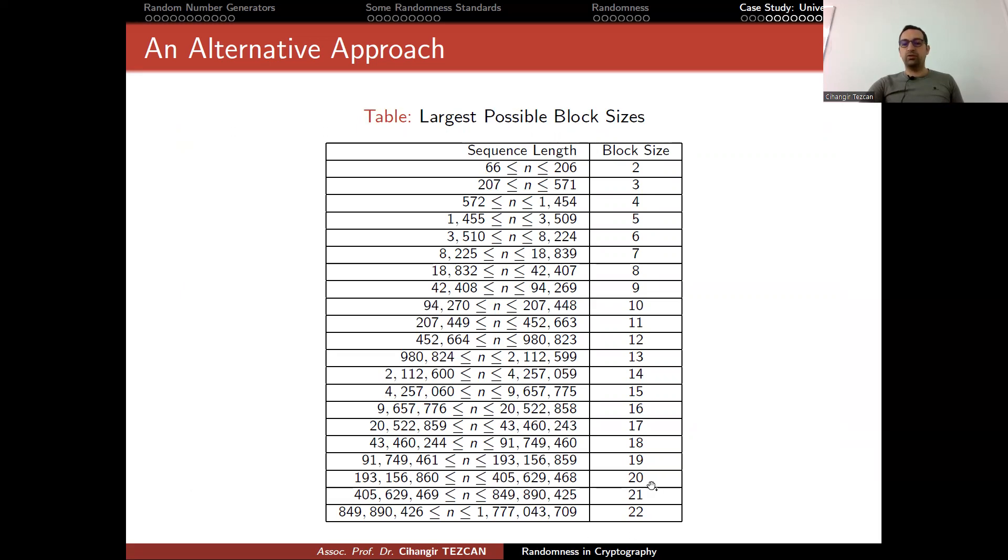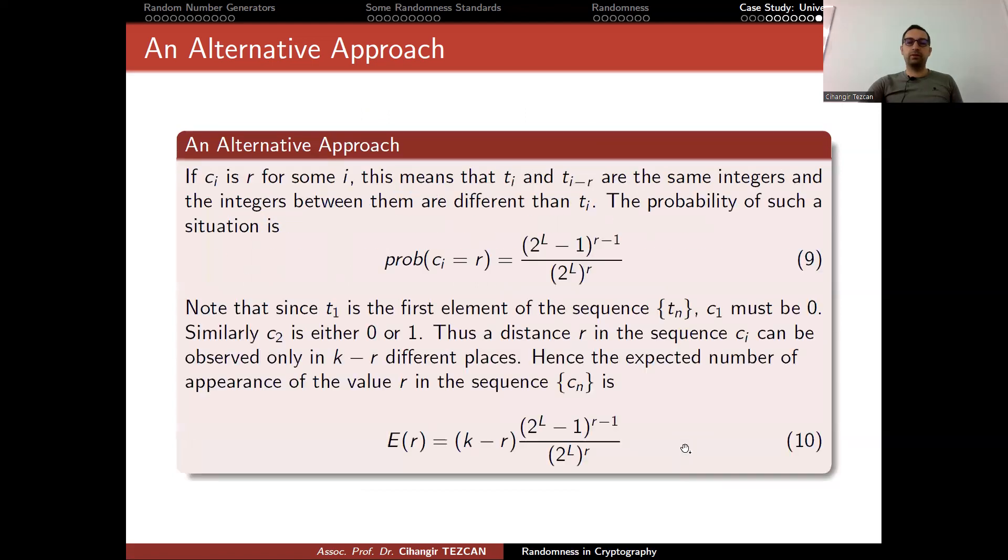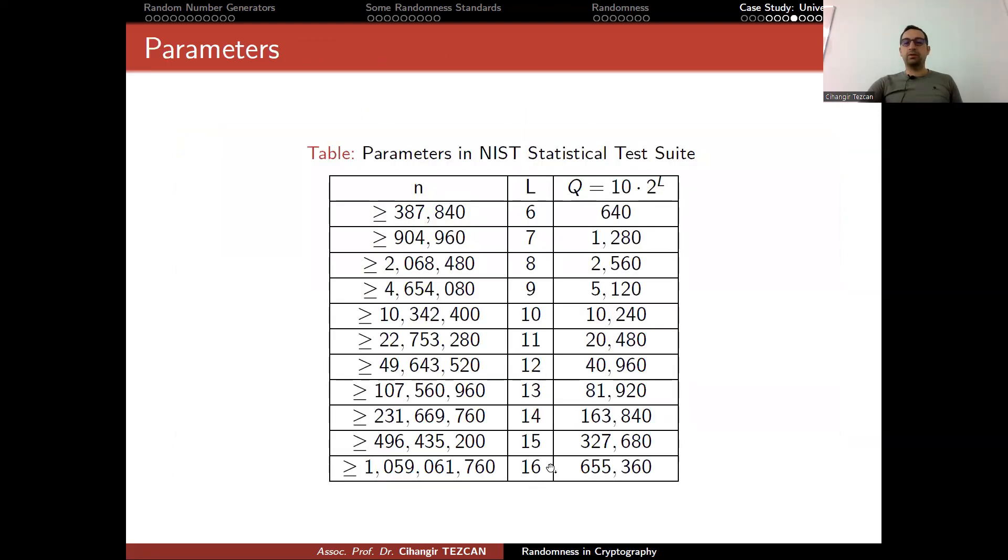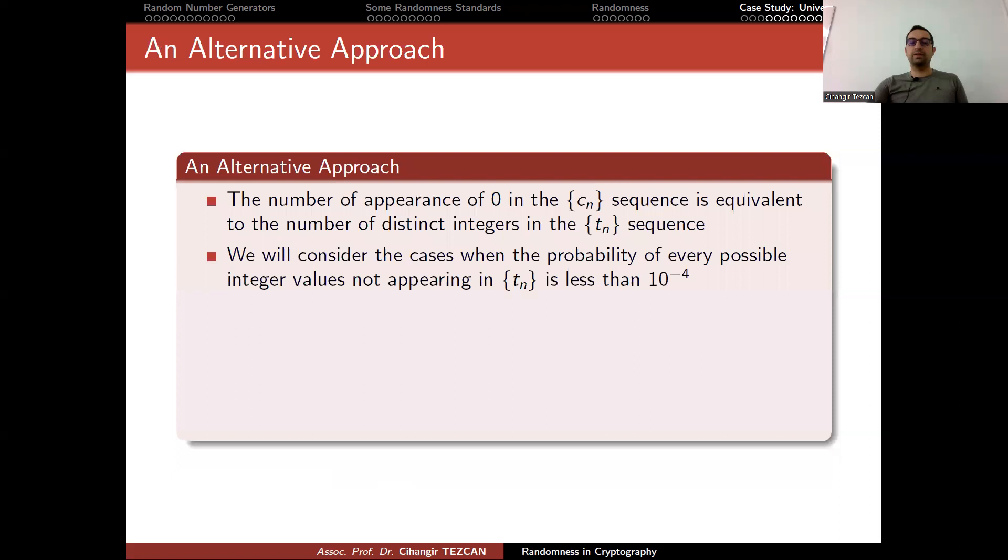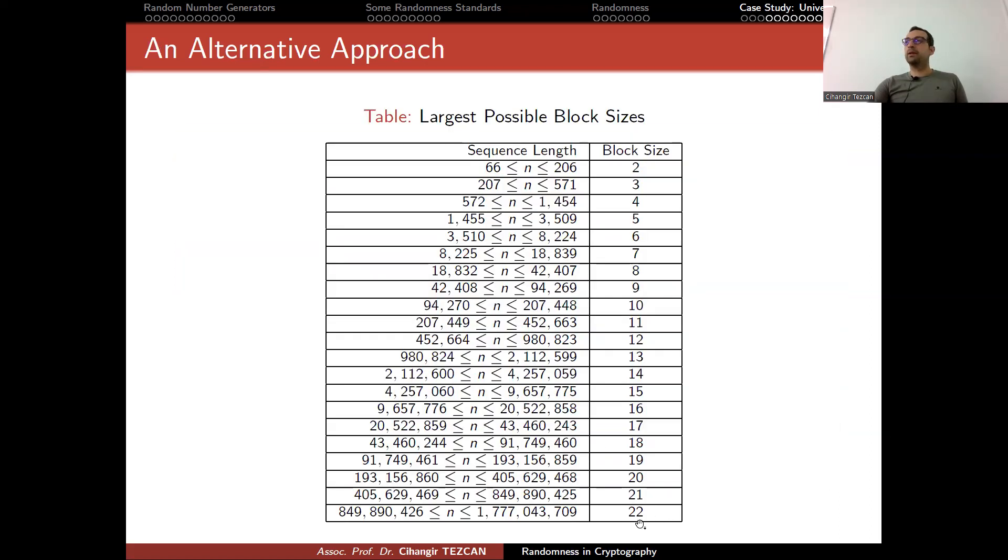If the length increases, you can choose larger blocks. This is important because if we go back to Maurer's test, you can see that in order to choose block size as 16, the length of the sequence must be really high. This was a problem because there was a very bad random number generator where the Maurer's statistical test could detect it only if you could choose L something like 26. But if you choose it 26 or 20, you have to generate a very large sequence. Our modification allows us to detect this kind of bad random number generators with generating smaller length outputs compared to the original Maurer's test.